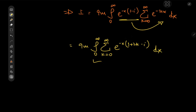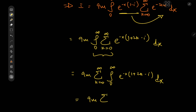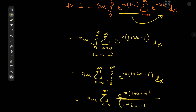Since this is convergent, we switch the order of operators and write this as the imaginary part of the sum over k from zero to infinity of the integral from zero to infinity of e^{-(1 + 2k - i)x} dx. Integrating, we divide by the derivative of the argument — with a negative sign outside — giving 1/(1 + 2k minus i), evaluated at limits 0 and infinity.